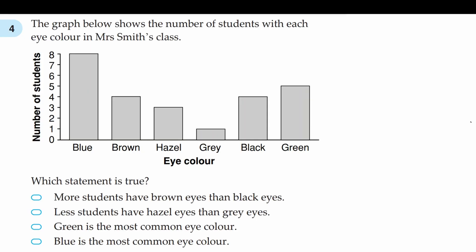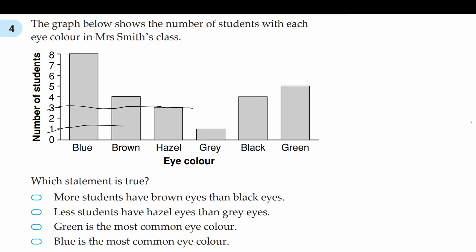Question four: the graph below shows the number of students with each eye colour in Mrs Smith's class. Which statement is true? We're going to go through each statement and check if it's correct. The first statement says that more students have brown eyes than black eyes — four students have brown eyes and four students also have black eyes, so that is not the answer. The next statement says that fewer students have hazel eyes than grey eyes — three students have hazel eyes and one student has grey eyes, so that is also not the answer.